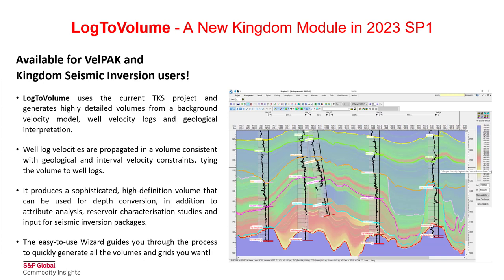Log2Volume uses the current TKS project and generates highly detailed volumes from a background velocity model, well velocity logs, and geological interpretation. Well log velocities are propagated in a volume, consistent with geological and interval velocity constraints, tying the volume to well logs. It produces a sophisticated, high definition volume that can be used for depth conversion, in addition to attribute analysis, reservoir characterization studies, and input for seismic inversion packages.